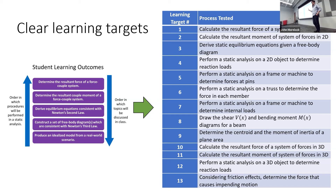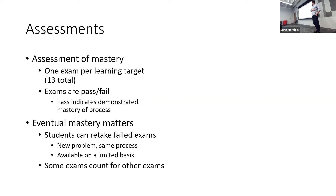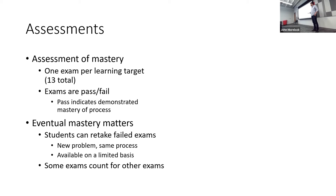We are assessing mastery — there's one exam per learning target. Every exam is pass-fail. These are 25-minute in-class assessments where students are given a problem and asked to show they understand the process being tested. A pass means they demonstrated mastery. If they don't pass, it's just 'you didn't pass yet' — they have a chance to retake. Students can retake failed exams with a brand new problem testing the same process. It's limited though — there are no unlimited retakes, as I just don't think that's feasible.